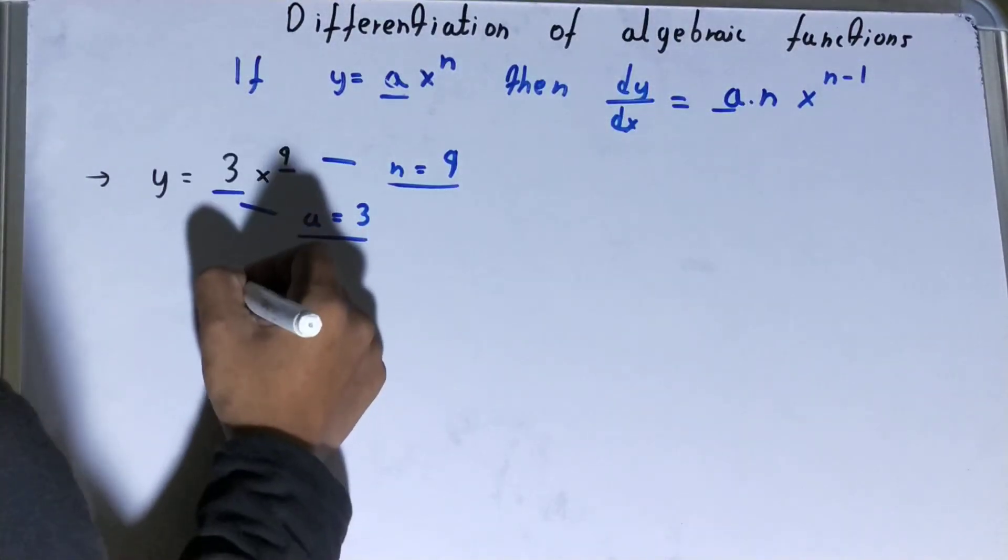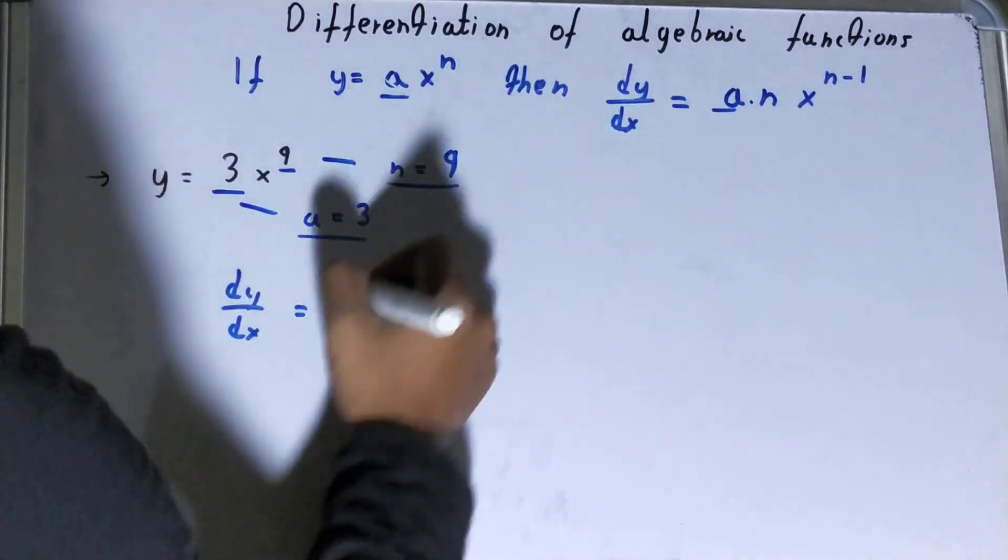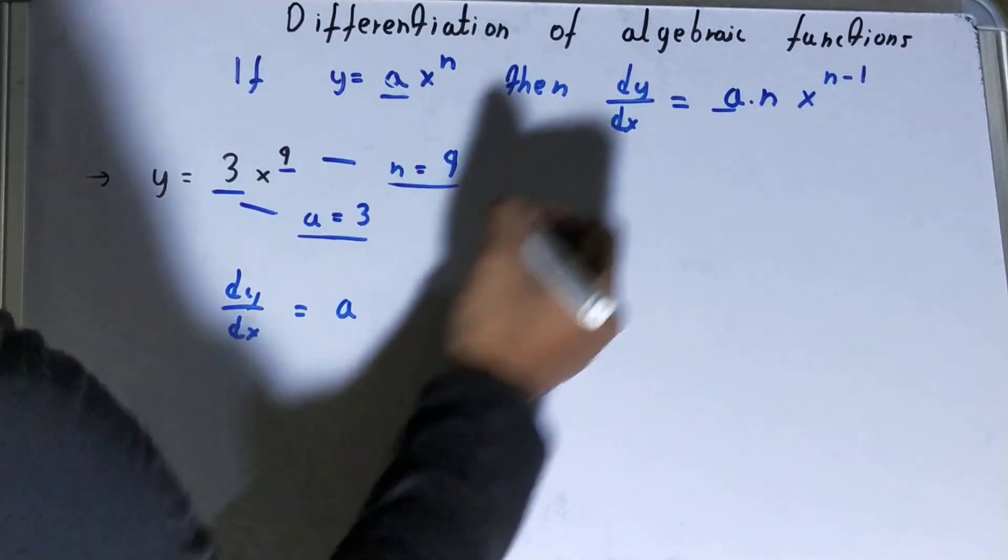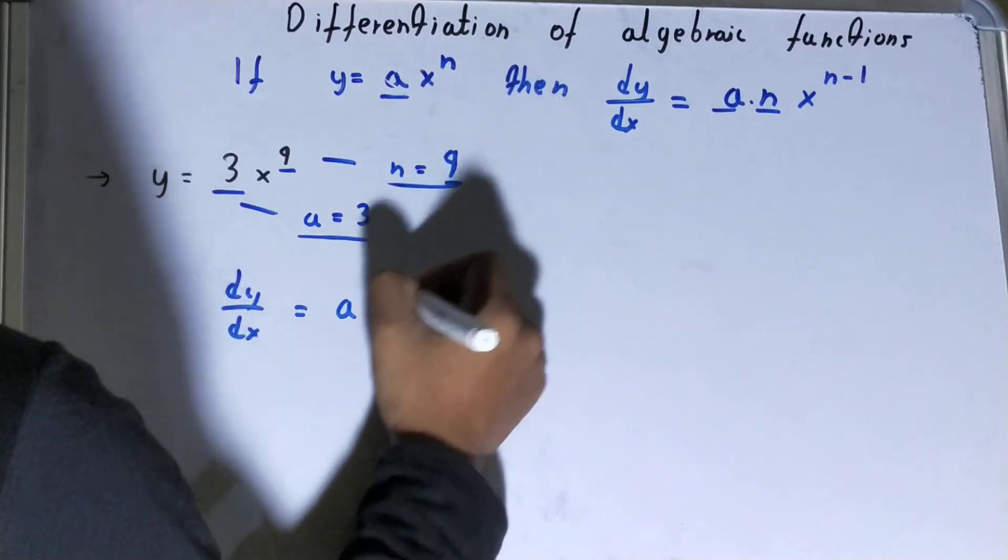For a, we will write it like this. For n, we will write it in multiplication, so our n is 9.